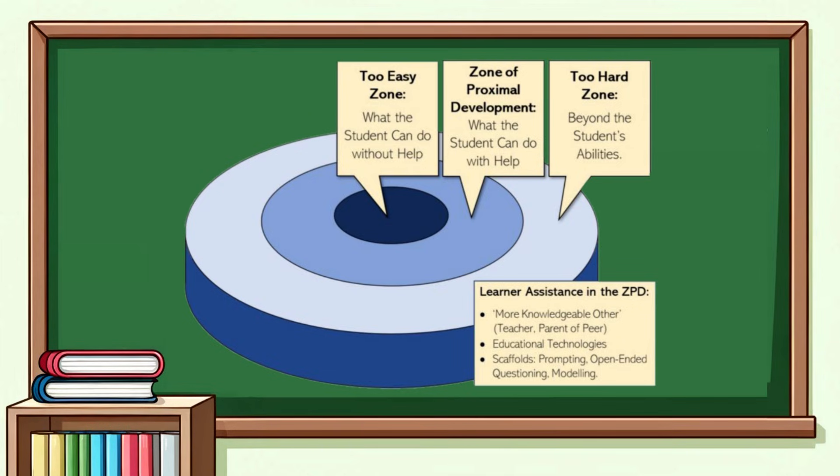Typically, this concept is visualised with concentric circles as shown on the screen now. The three zones in the diagram represent the difficulty level of the task. Let's explore each zone.